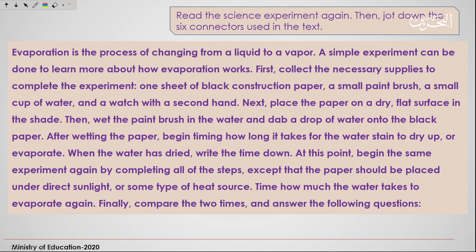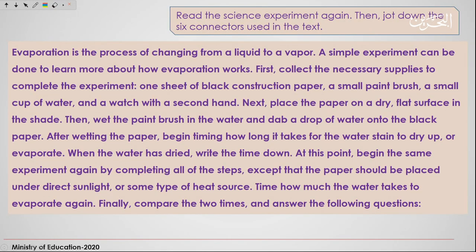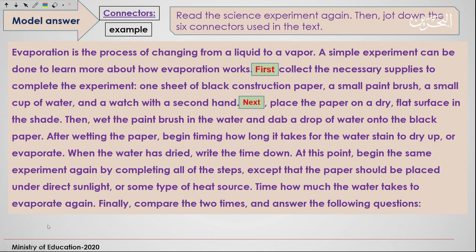Now, what I want you to do is read it again. This time, I don't want you to write the sequence of the experiment, but I want you to write the linkers that were used to form the whole process of the experiment. I'll give you 30 seconds. Let's check your answers. As I said earlier, you follow the linkers. We say 'finally' because we're done with the whole experiment.